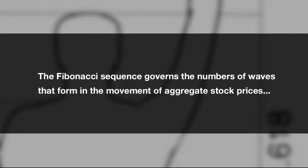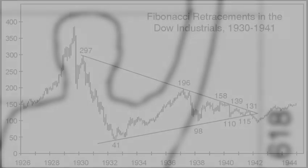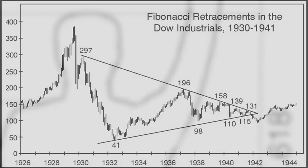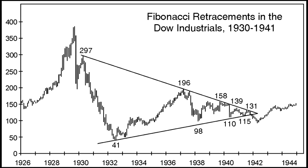The Fibonacci sequence governs the numbers of waves that form in the movement of aggregate stock prices. Long and short-term market charts are often filled with Fibonacci relationships. Here's one example from Elliott Wave Principle with the accompanying commentary.